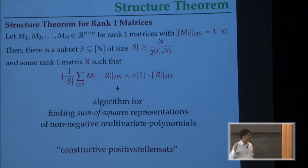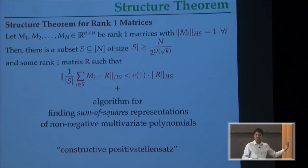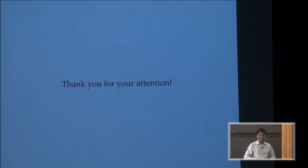The algorithm then follows by a somewhat standard technology of finding sum of squares representations for non-negative polynomials whenever they exist. There's a constructive proof that allows you to do this. I'm basically throwing out buzzwords because in case you're interested, you can look these words up. I'm not trying to explain this. Thank you for your attention.